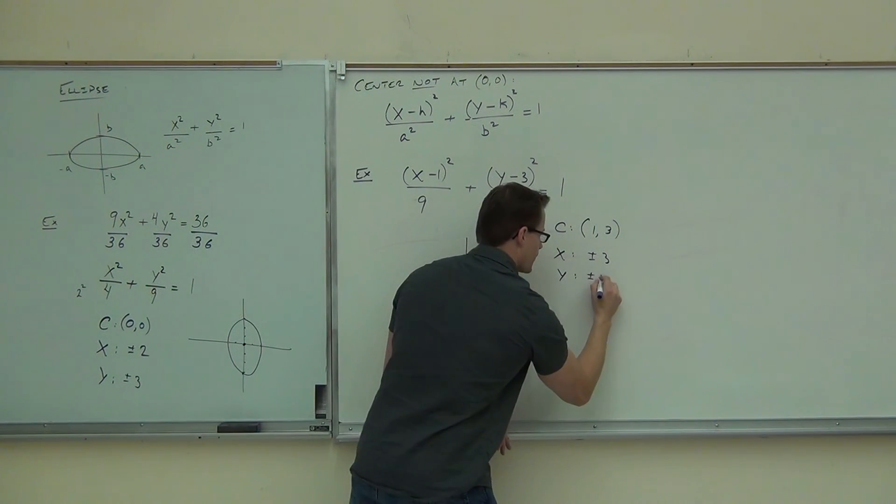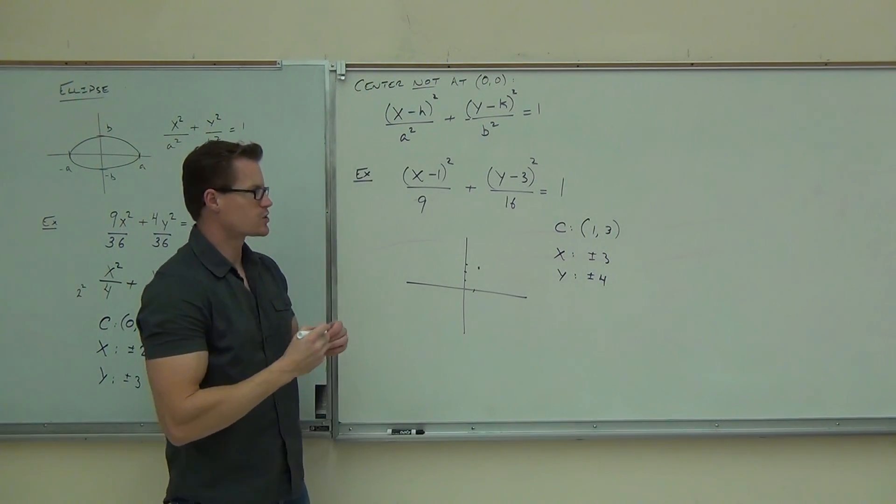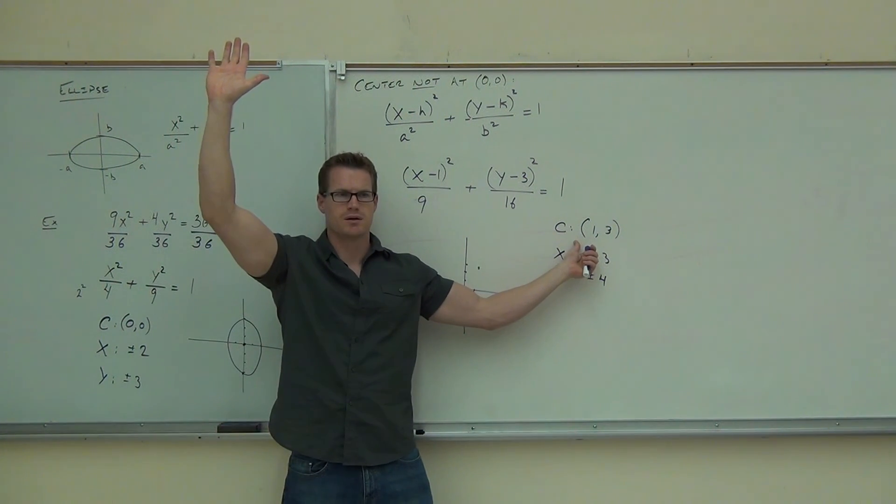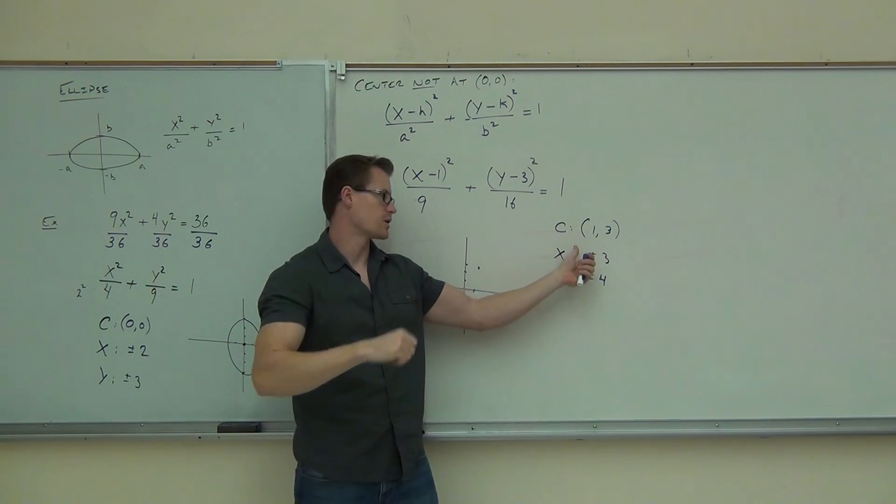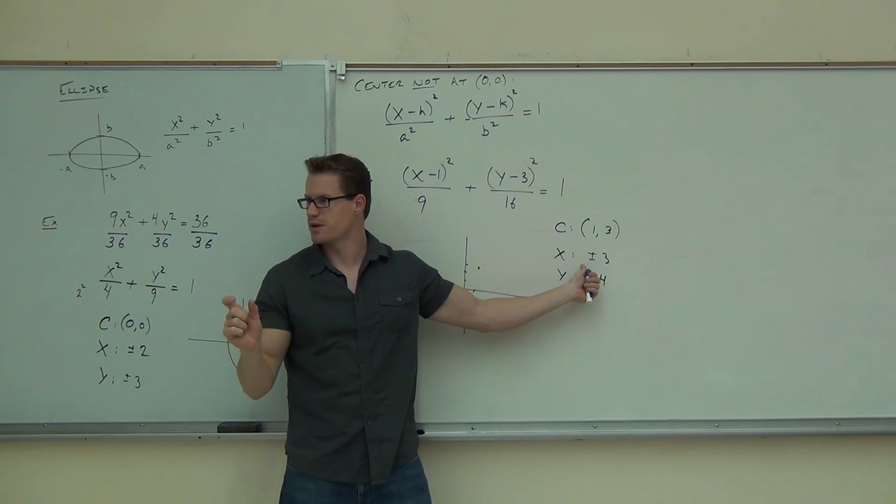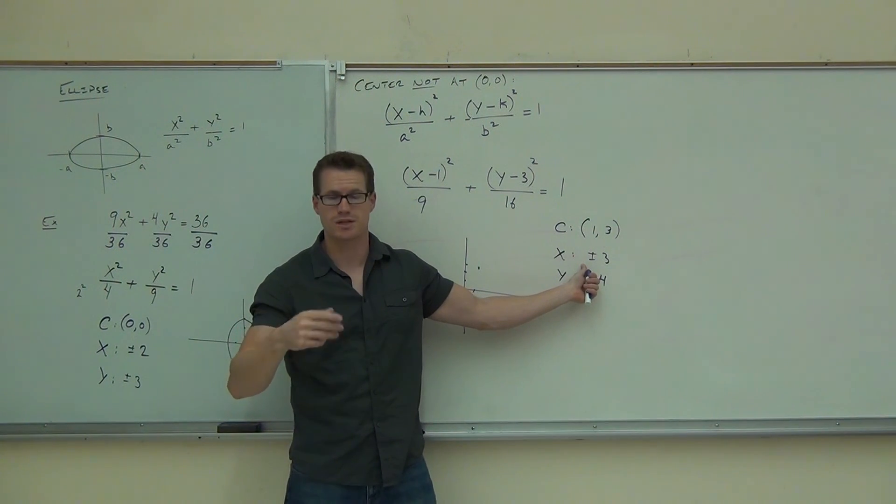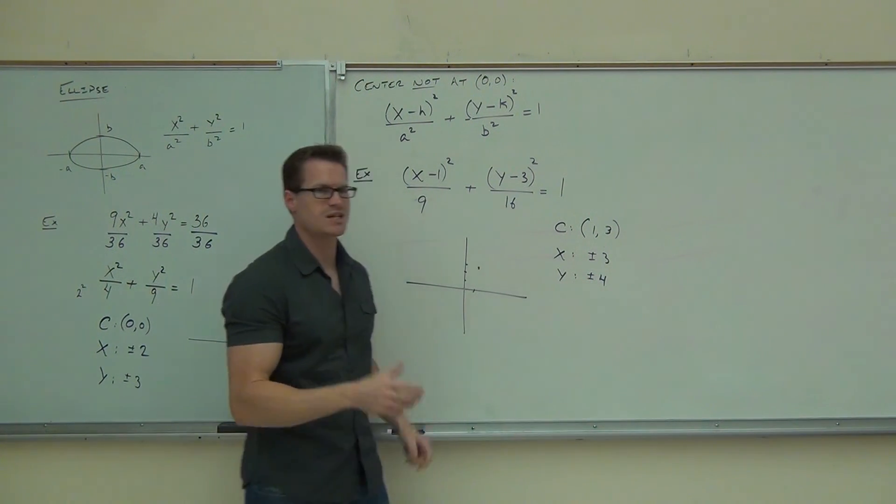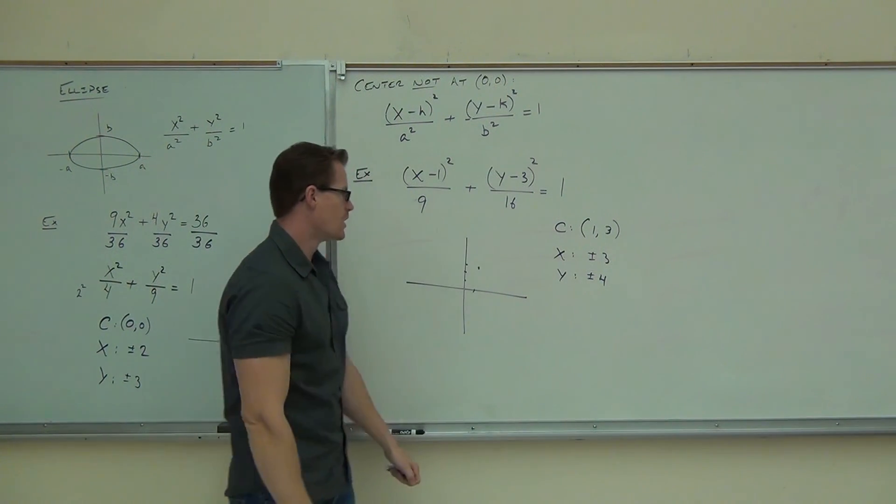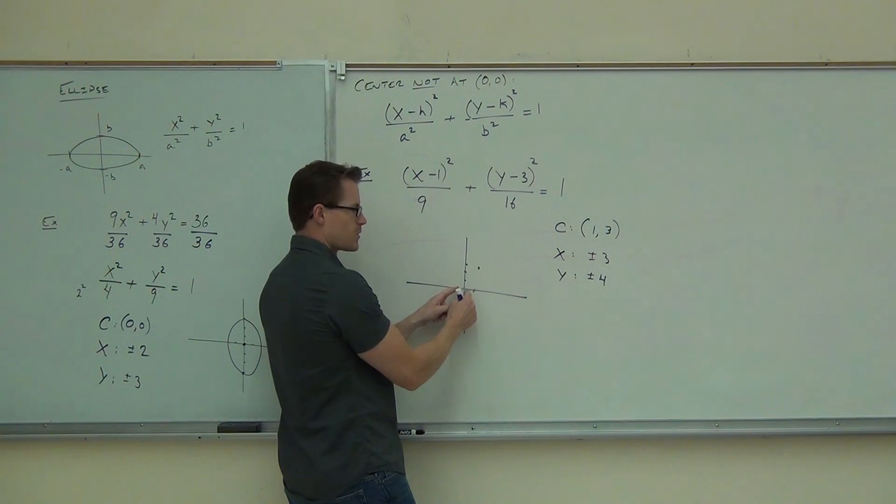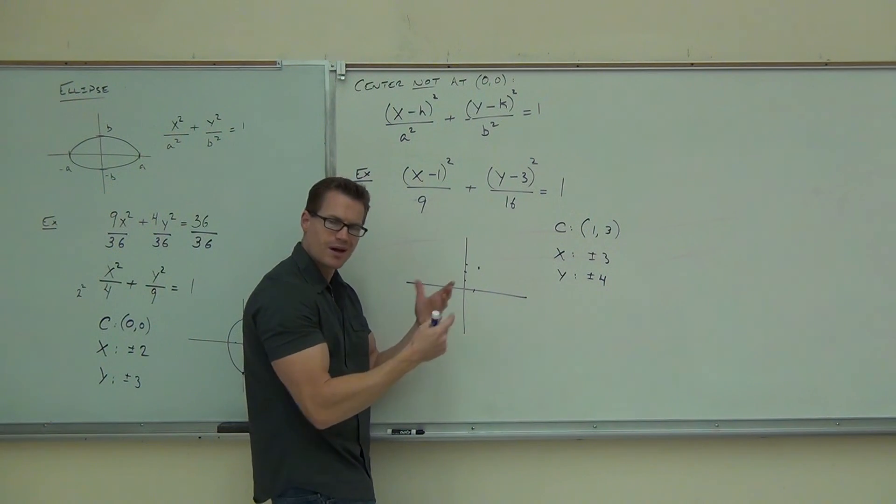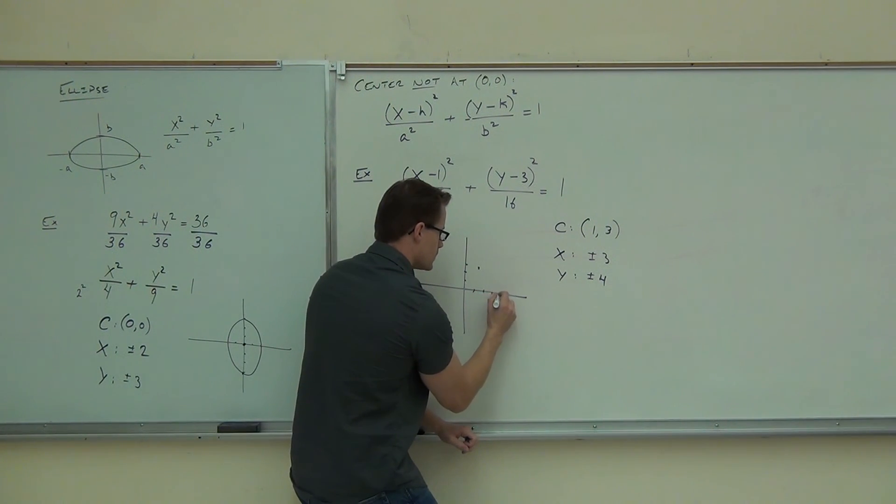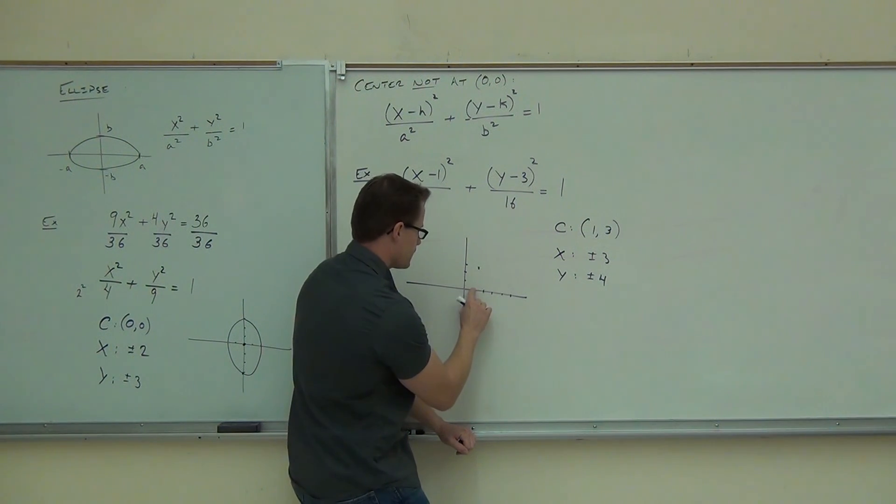Quick show of hands. How many people feel okay finding the center of this thing? Good. How about this x along the x-direction? You okay finding that plus and minus 3? It's very similar to our ideas with an ellipse not centered at 0, 0. And then the plus or minus 4, that's coming from our 16. We take a square root of that. Of course, we're going in both directions there. So from our center, we're going to go, not from the origin, but from the center, right 3, left 3, up 4, down 4. Just like a circle that's not centered at the origin.